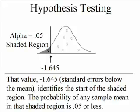The value negative 1.645, that is standard errors below the mean, identifies the start of the shaded region. The probability of any sample mean in that shaded region is 0.05 or less. So if the null hypothesis is true, there's a 0.05 chance that the sample mean will end up there even though no effect is going on — that would be bogus evidence, and we would be incorrectly rejecting the null.